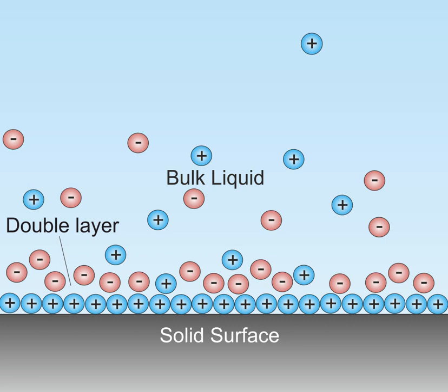DLs play a fundamental role in many everyday substances. For instance, homogenized milk exists only because fat droplets are covered with a DL that prevents their coagulation into butter.